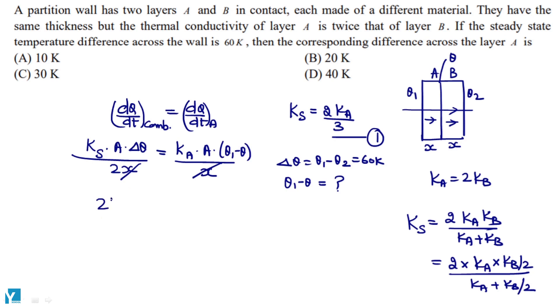K s is 2 k a by 3 into a into delta theta 60 Kelvin by 2x is equal to k a into a into theta 1 minus theta, which I will find out.